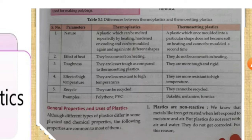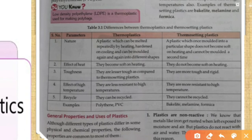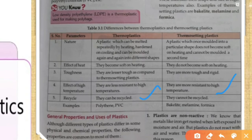Examples of thermosetting plastics: bakelite, melamine, and formica. Your electric switches and handles of cookware are made from thermosetting plastic. Effect of high temperature: thermoplastics have less resistance and mold very easily, whereas thermosetting plastics can resist high temperature. Electric wires are covered with thermoplastic. For recycling: thermoplastics can be recycled easily; thermosetting plastics are for one-time use. Examples: polythene, PVC (thermoplastic); bakelite, melamine, formica (thermosetting).